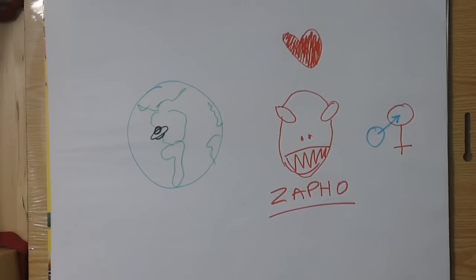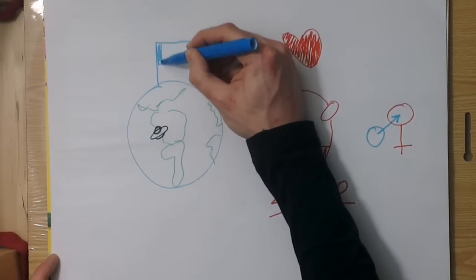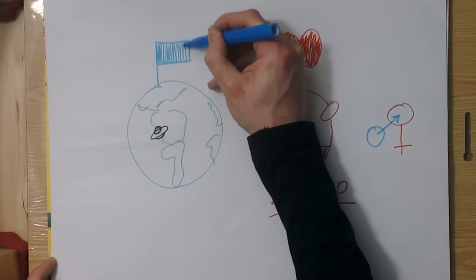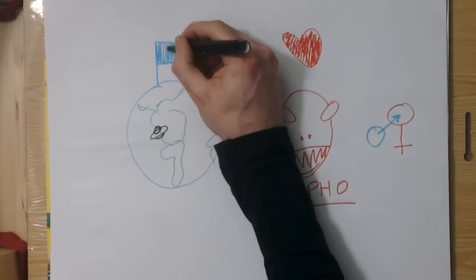Who knows how he pulled it off? Perhaps he bribed the lizard people with trinkets from his advanced civilization. Maybe he used some of his superior technology to exterminate any opponents. In any case, Kraf was soon king of his new world. Zapho was pledged to him, and he set about securing his legacy.